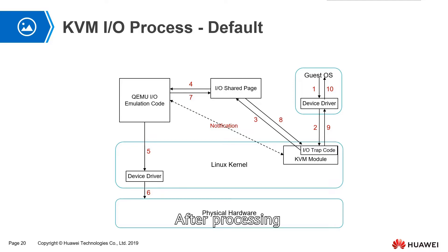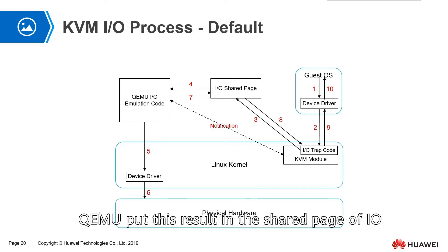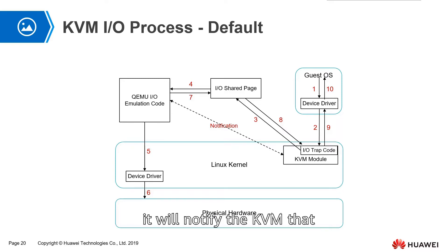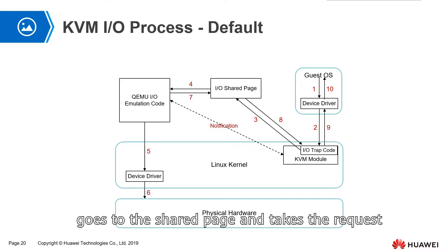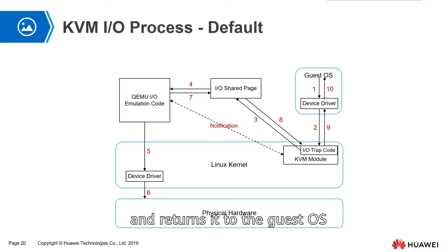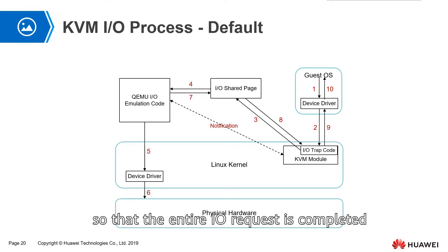The device driver then goes to the physical hardware to process the IO request. After processing, QEMU puts the results in the IO share page. At the same time, it will notify KVM that the request has been processed. Then the KVM module goes to the share page, takes the result, and returns it to the guest OS, so that the entire IO request is completed.